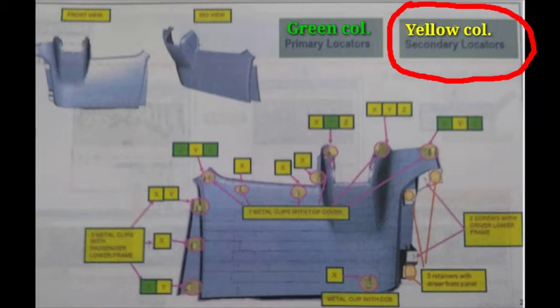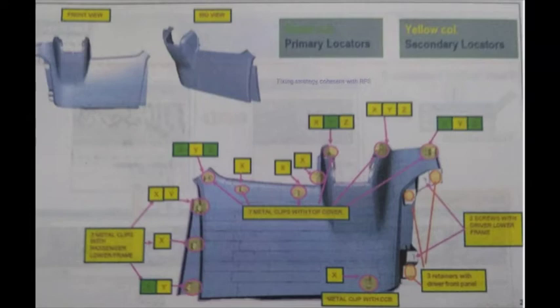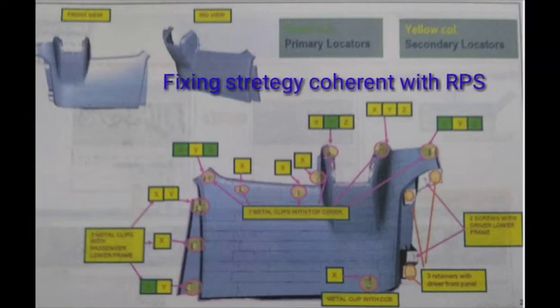The main function of fixation locator is to lock the part opposite of assembly direction so that it won't come out. The fixing strategy should be coherent with the RPS Reference Point System.